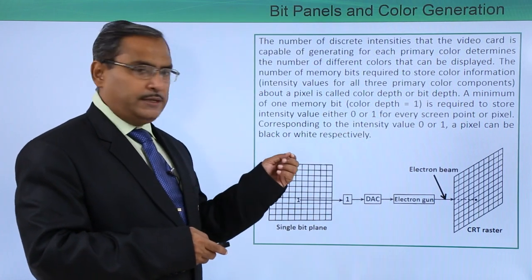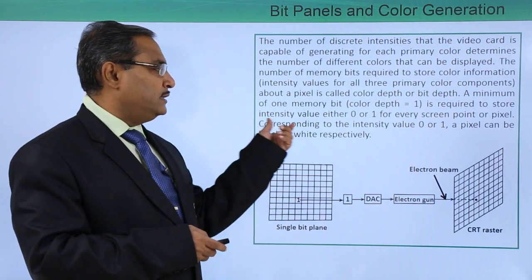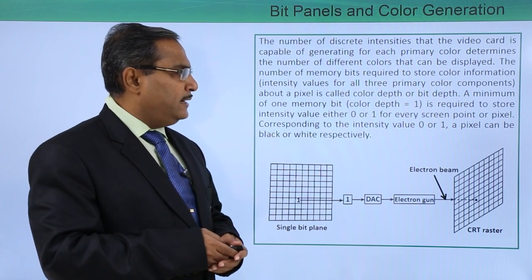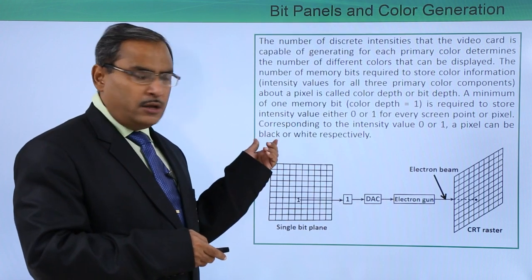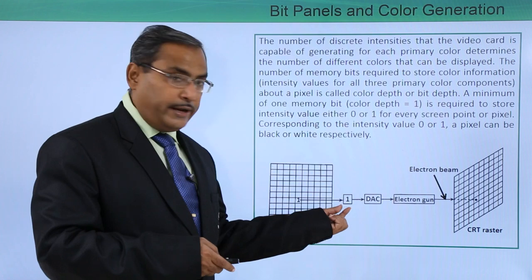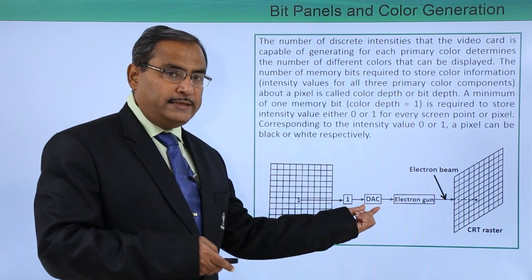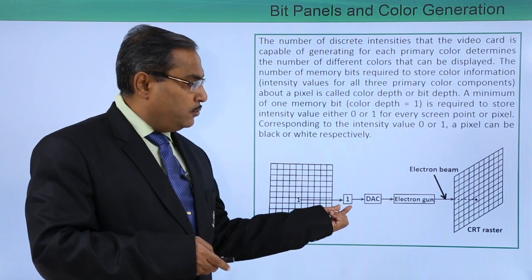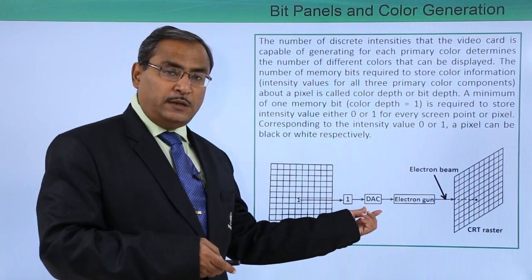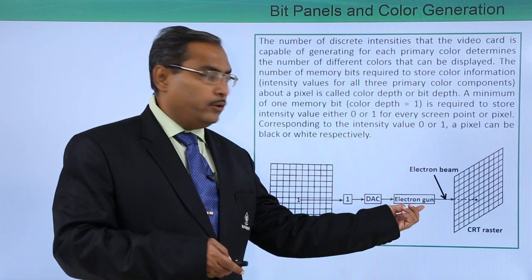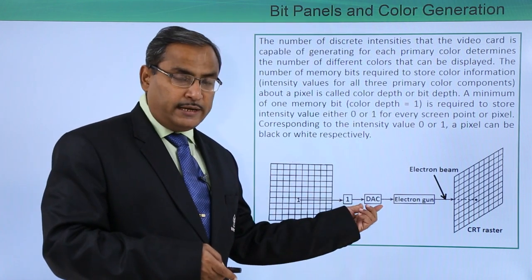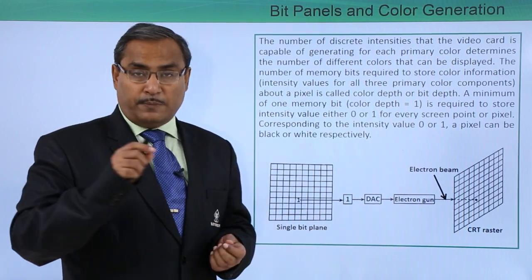A minimum of one memory bit — that is, a color depth equal to 1 — is required to store the intensity value, either 0 or 1, for every screen point or pixel. Corresponding to intensity value 0 or 1, a pixel can be either black or white respectively. Consider this single bit plane; here we have value 1, which represents red. This is our digital-to-analog converter, or DAC, because we have a digital value but the CRT requires analog. Depending on this bit, the respective analog value will be obtained, which will ignite the electron gun accordingly, and the corresponding dot will be displayed via the electron beam on the CRT raster.